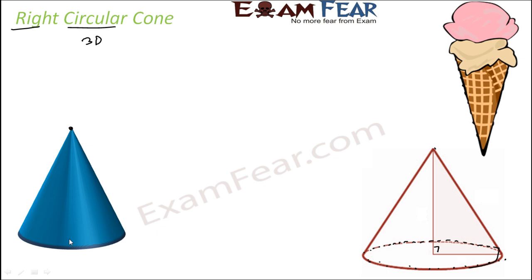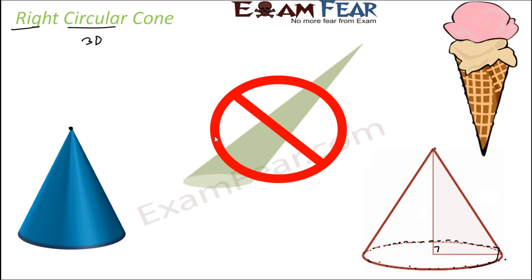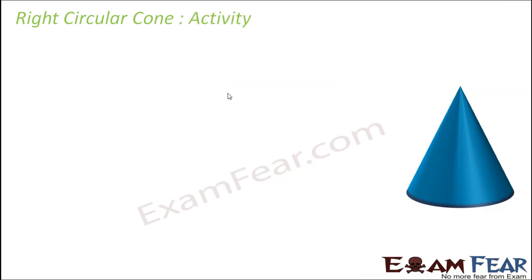In this chapter we will be discussing only about the right circular cone, so whenever cone is mentioned it is implied we are talking about a right circular cone. This shape here is not a right circular cone — the base is circular but the angle is not 90 degrees. Both the angle must be 90 degrees and the base must be circular for a cone to qualify as a right circular cone.